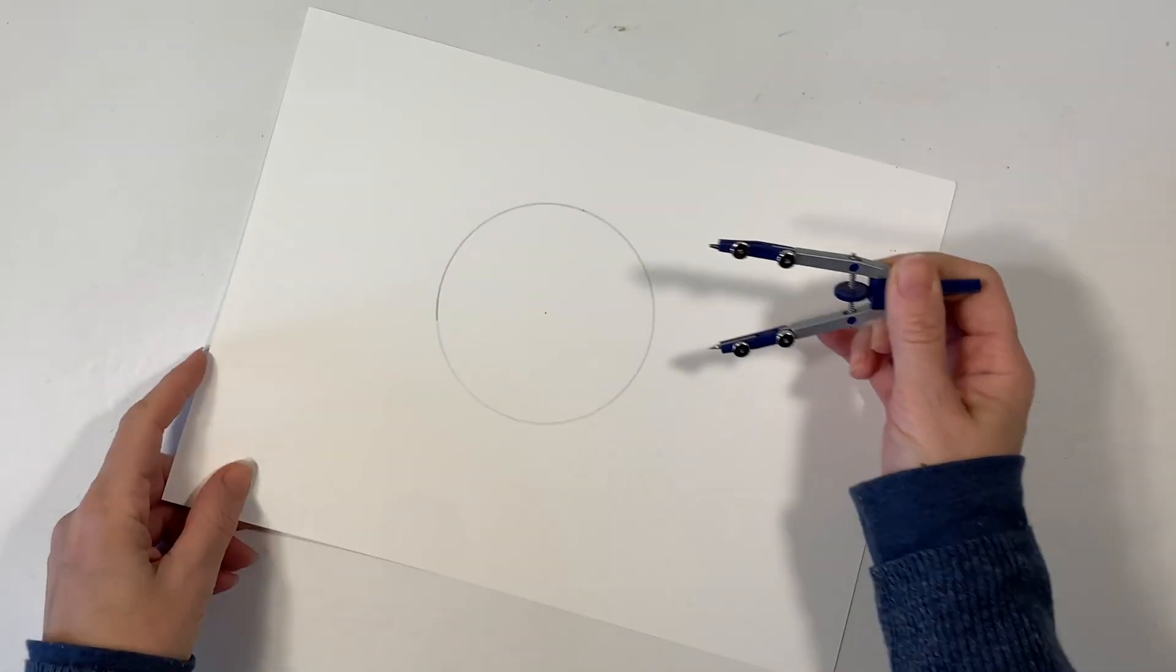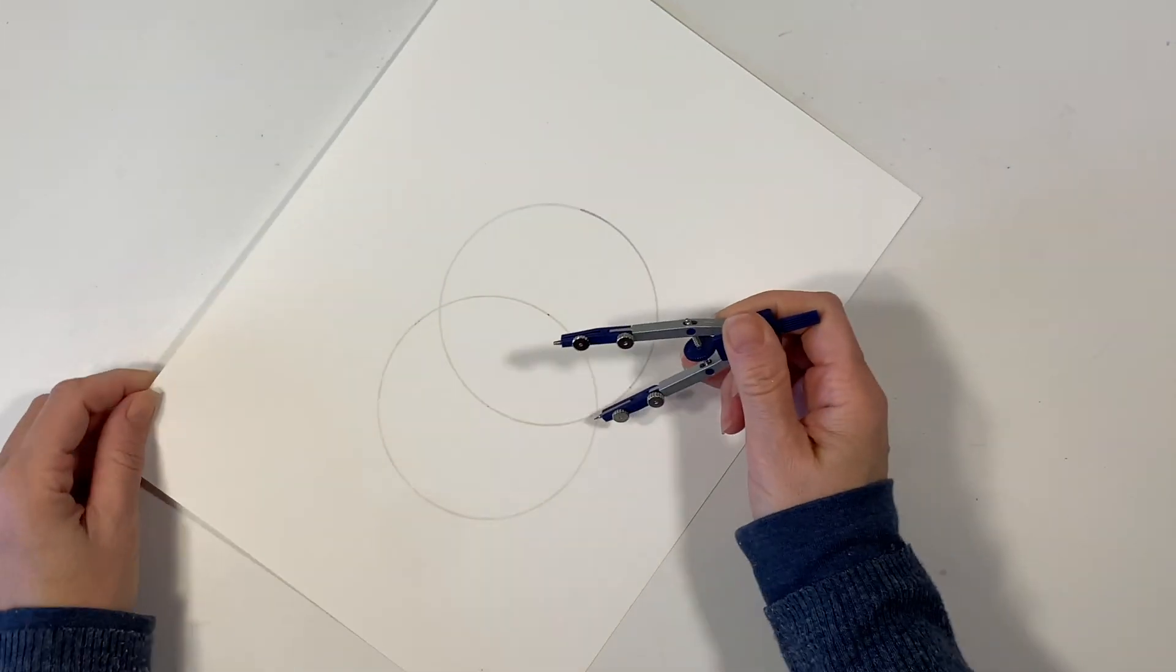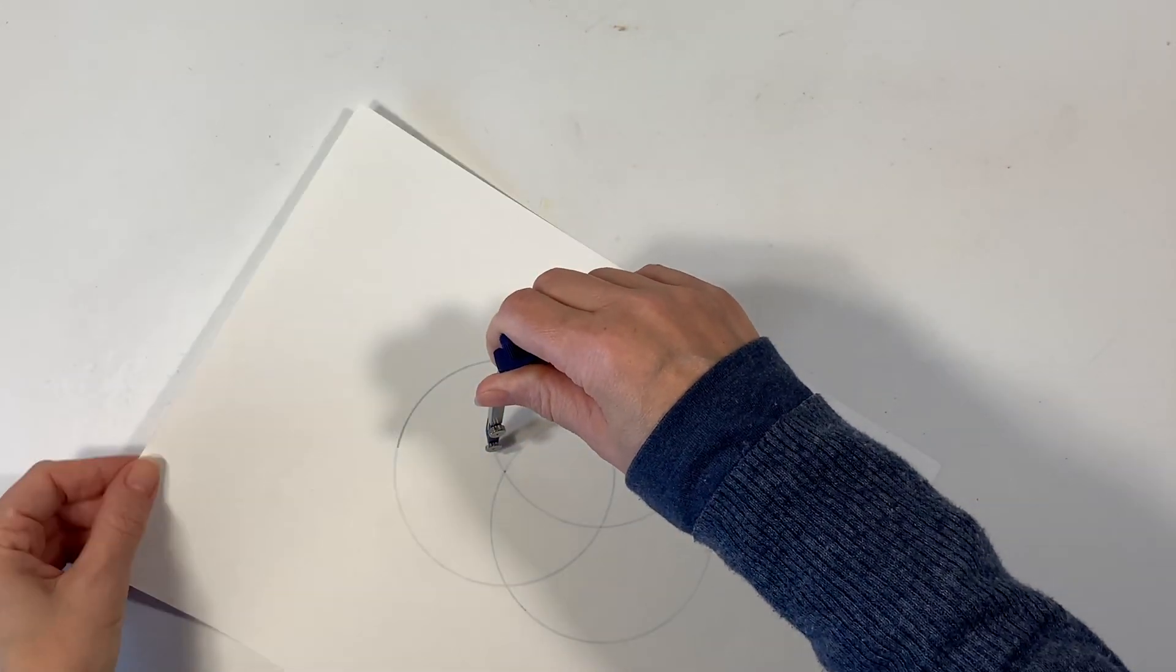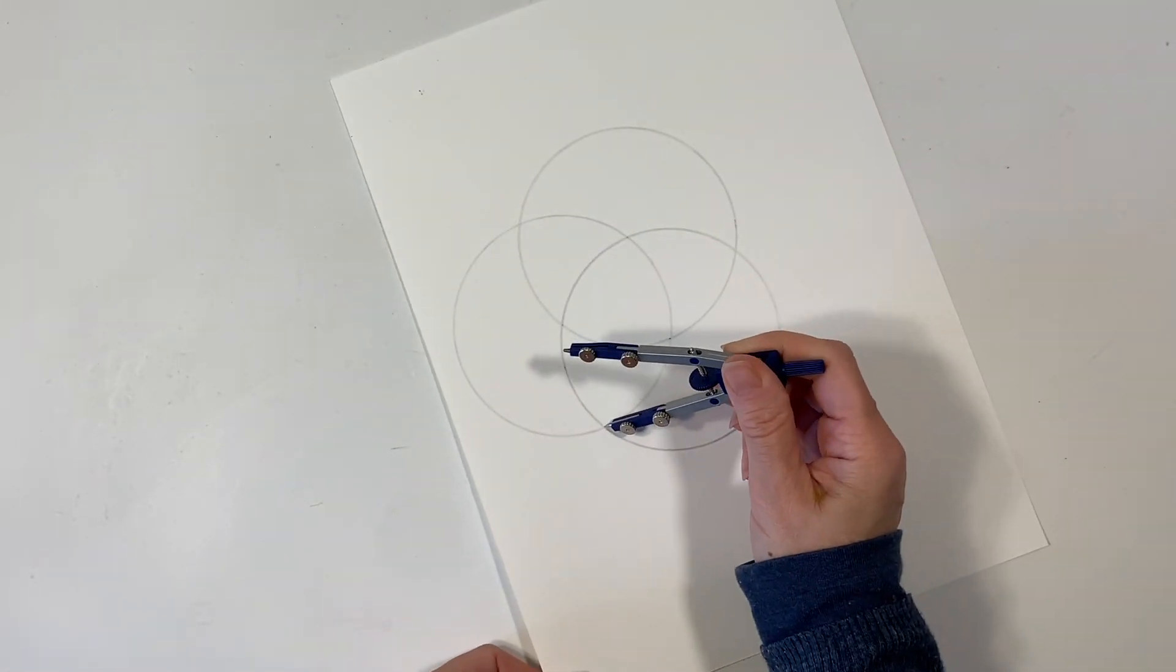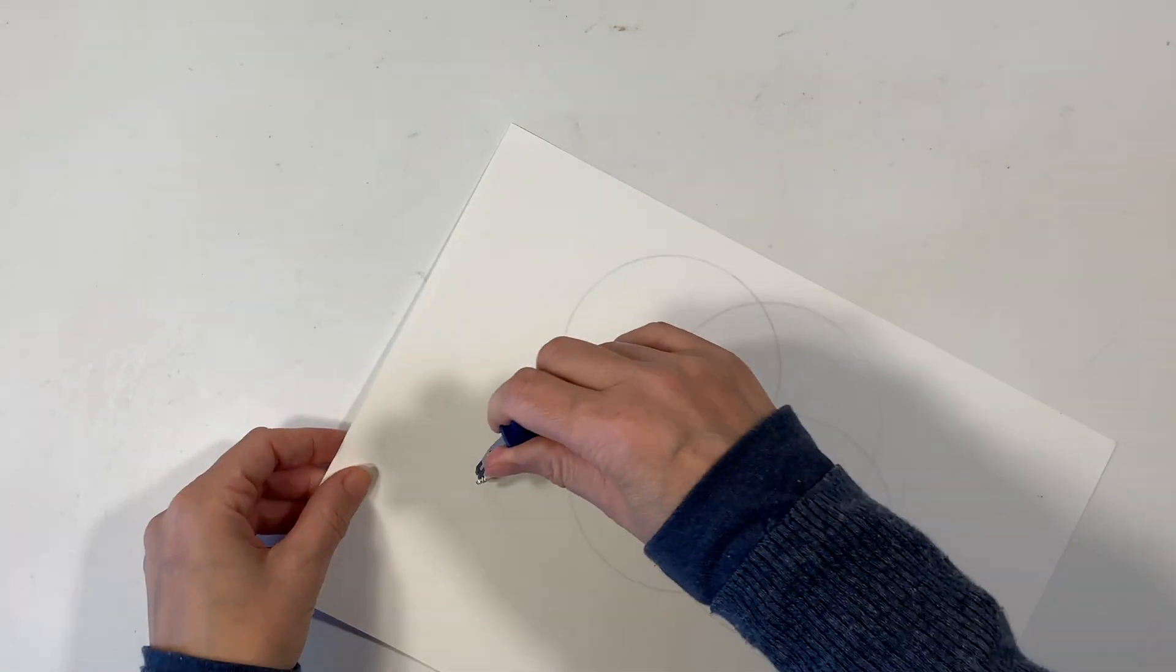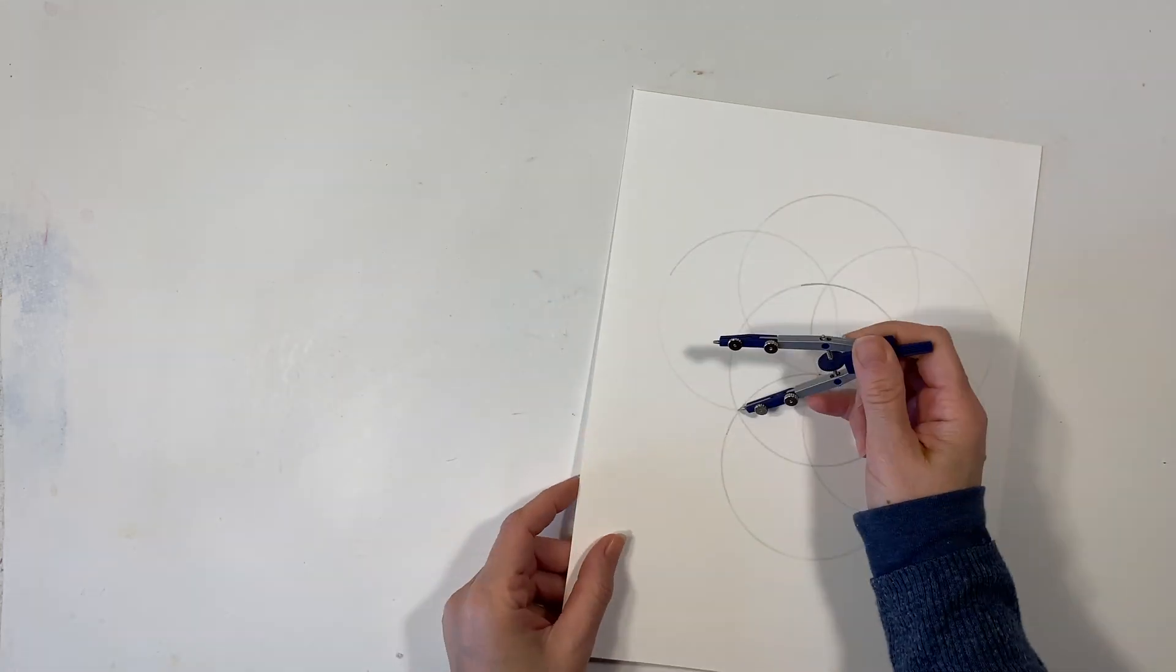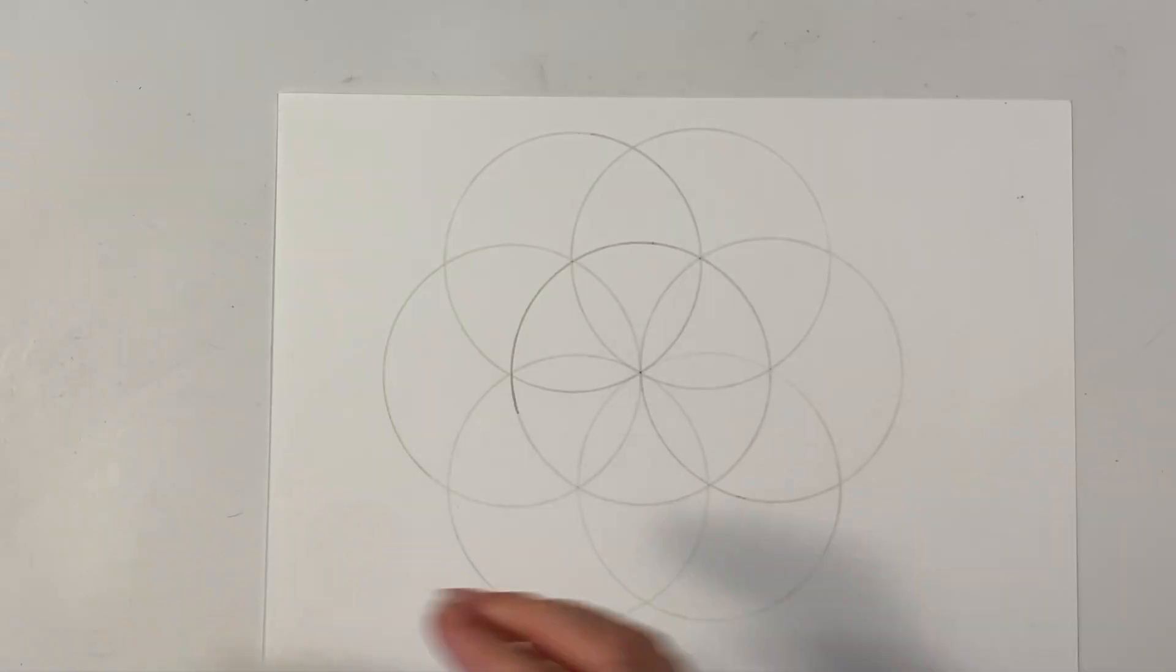I'm going to begin by drawing a circle in the center of the page and then I'm going to choose any point on the circle, set my compass and draw another circle and you're going to see that it intersects the circle in two places. So I'm going to set my compass again on each of those places and that way I can get six fold symmetry.